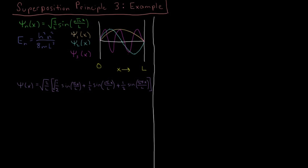Psi_1, graphed in orange, just goes up and down. Psi_2, where n equals 2, goes up and then down and back up. Psi_5 goes up and down five times over the course of the entire box. The energy of each of these individual eigenfunctions is Planck's constant squared times n squared over 8, times the mass of the particle and the length of the box squared.